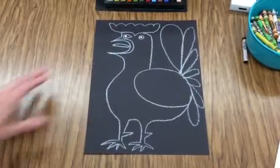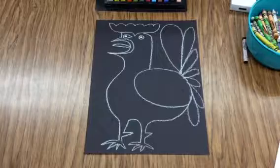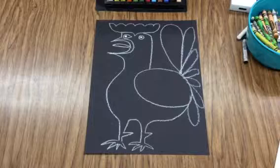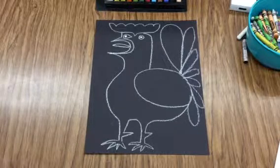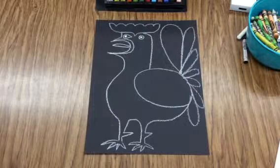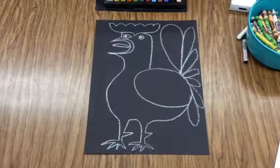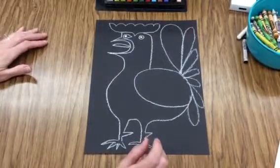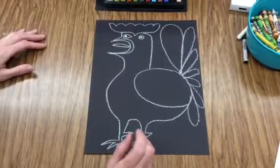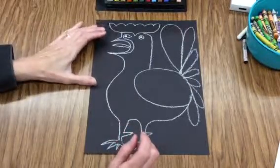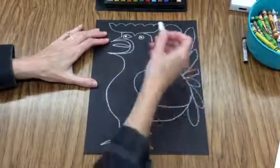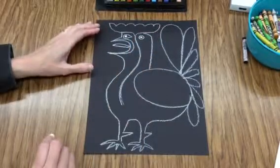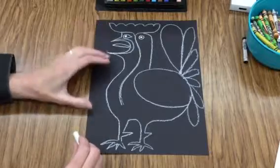The next part is adding color. We're going to use colored chalk for this. You will need to be wearing your art shirt because this gets kind of messy. Picasso's cubism paintings are pretty colorful, so feel free to add a lot of fun colors. You can also add another line if you want.